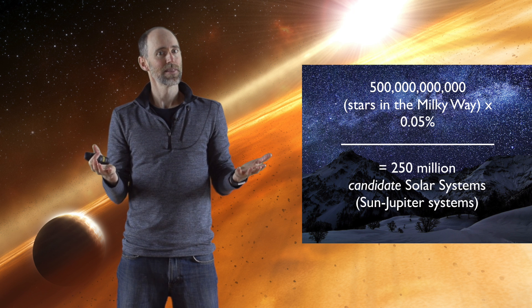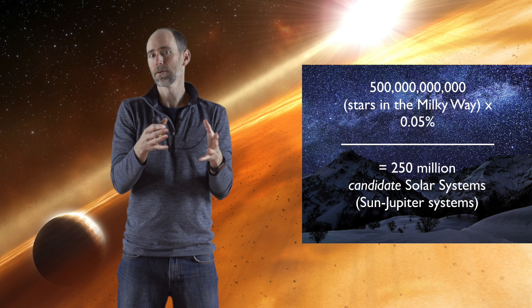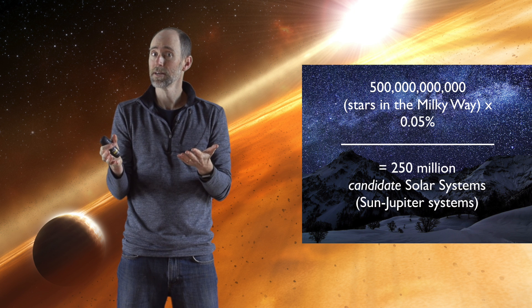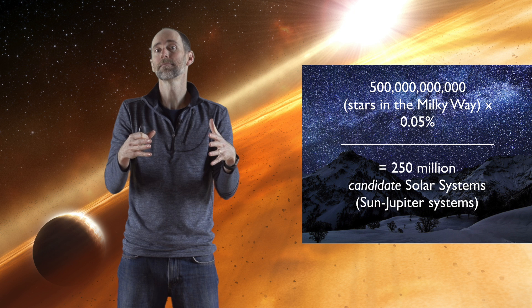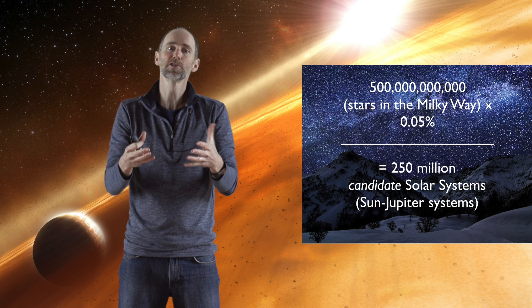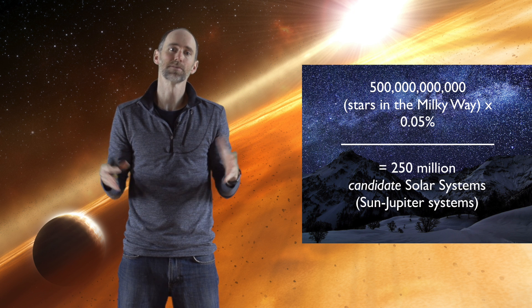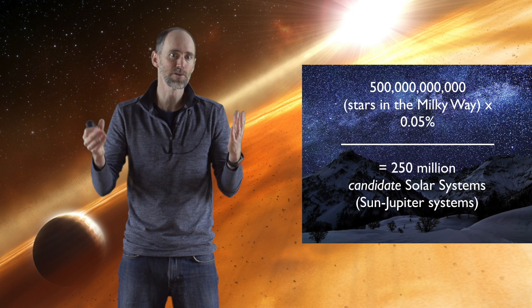At the same time, there could easily be certain characteristics that are more common. Like the occurrence of planets on orbits like Earth's, there may be a lot more of those than there are Sun-Jupiter systems. So putting all those together is a whole other thing.